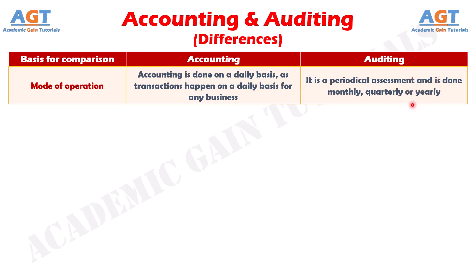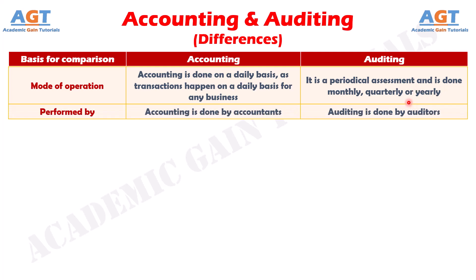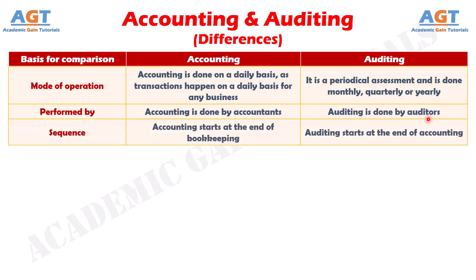Number five: Accounting is done by accountants, whereas auditing is done by auditors. And finally, difference number six: Accounting starts at the end of bookkeeping, whereas auditing starts at the end of accounting.